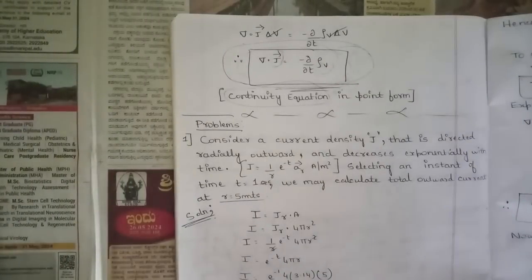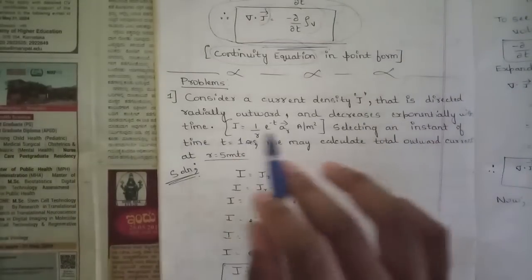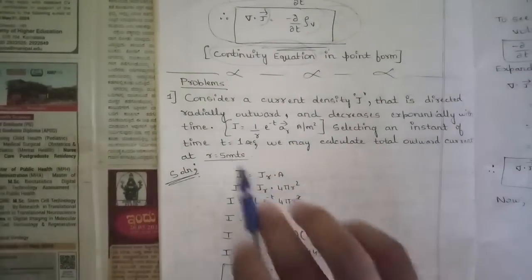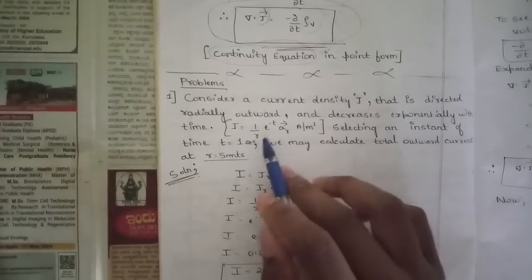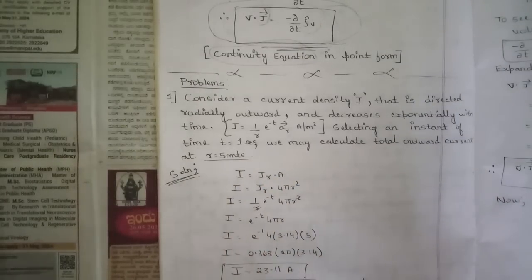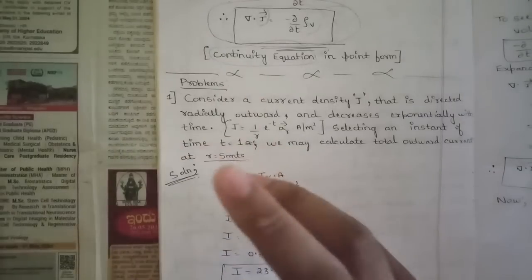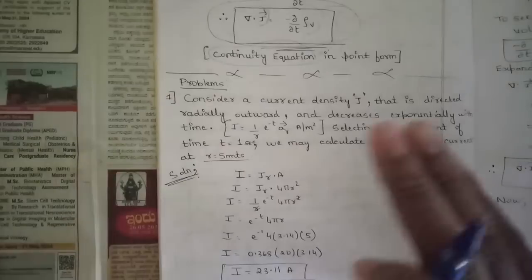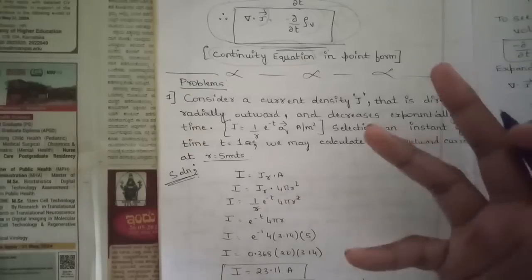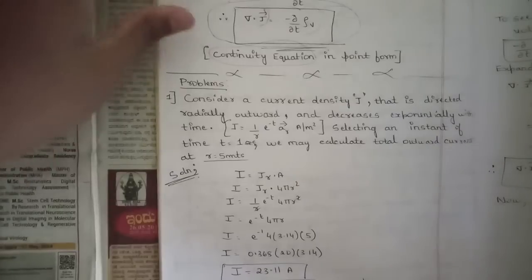Now let's solve a problem. Consider current density J directed radially outwards and decreasing exponentially with time. At t = 1 second, calculate the total outward current at r = 5 meters. The question also asks us to find the rate of change of displacement with respect to time — which is velocity — using the given parameters.